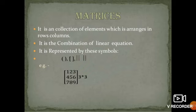It is represented by these symbols. For example, 3 rows and 3 columns. The order of this matrix is 3 by 3.